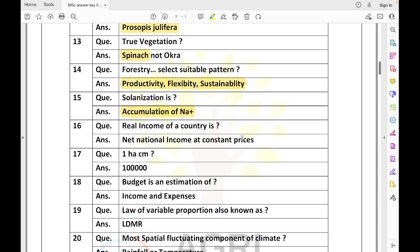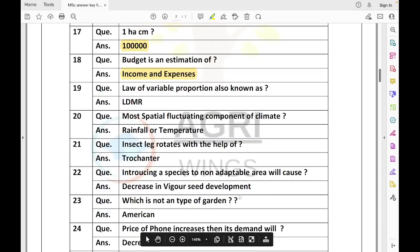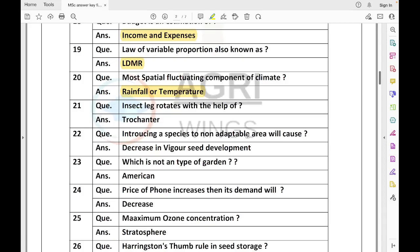True vegetable - which is a true vegetable? That is spinach. Okra is a true fruit. Spinach is your true vegetable. About forestry, what is suitable? Forestry system should be productive, flexible, and sustainable. Among the options was flexibility and adaptability. Real income of a country means net national income at constant prices. One hectare centimeter equals one lakh liters of water. Budget is an estimation of income and expenses.